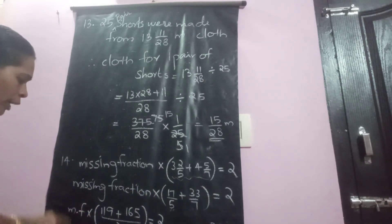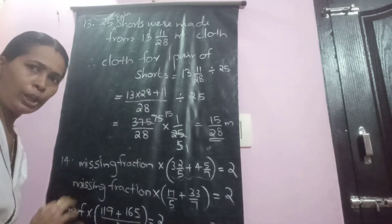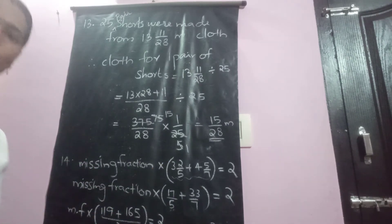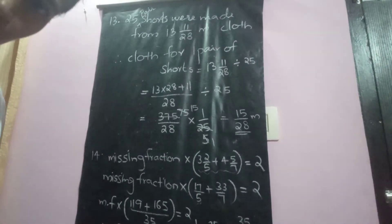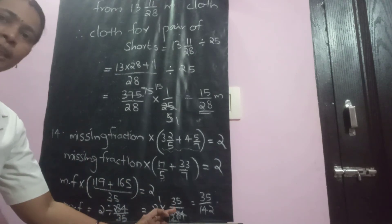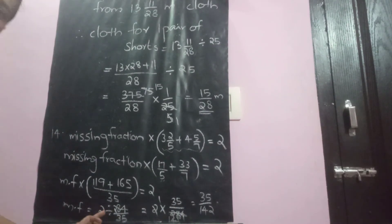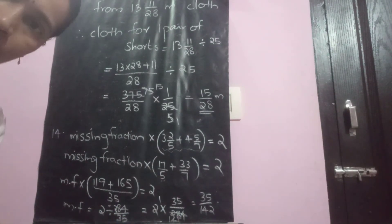Then in order to find missing fraction, transpose the whole sum to right side. So here multiplication when transposing, what we have to do? That we have to divide. Here multiplication when you are changing it will become division. That is 2 divided by 284 by 35 is coming. 284 by 35, that can be written as 2 into 35 by 284.